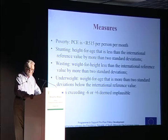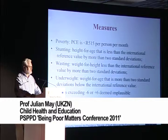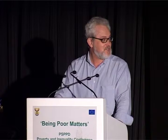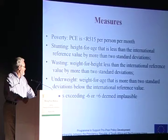The measures we're using include poverty, using the lower bound poverty line discussed at this meeting. We use stunting, where children are less than the international reference value by two standard deviations. We also use wasting, using the same distance from the international reference, and underweight. We have excluded, as is conventionally done, extreme values between minus six and plus six, which we deem implausible.